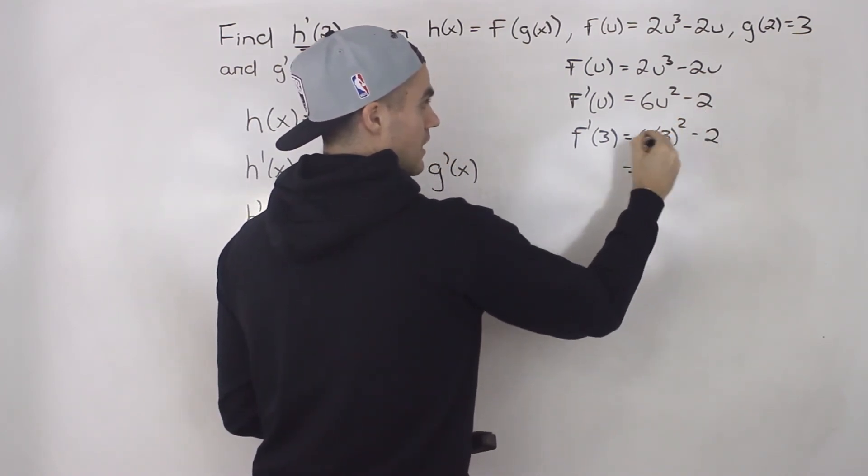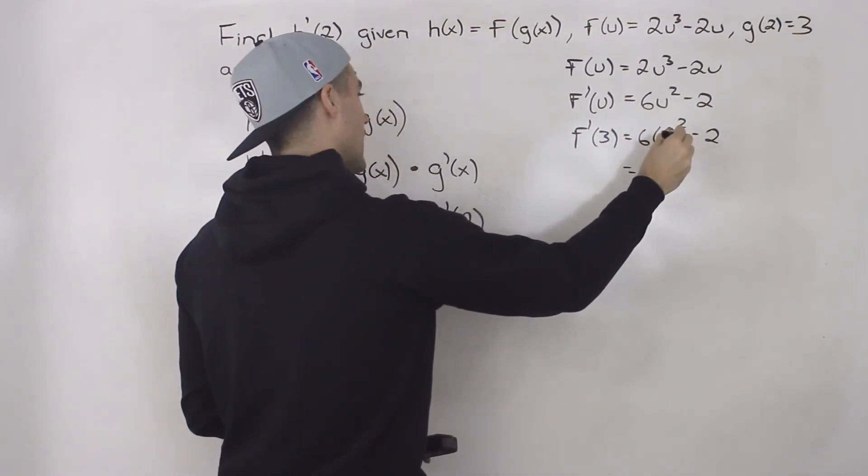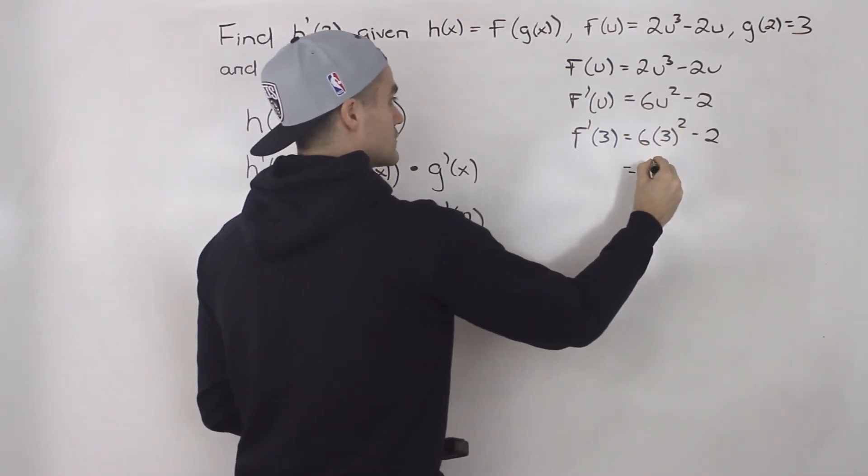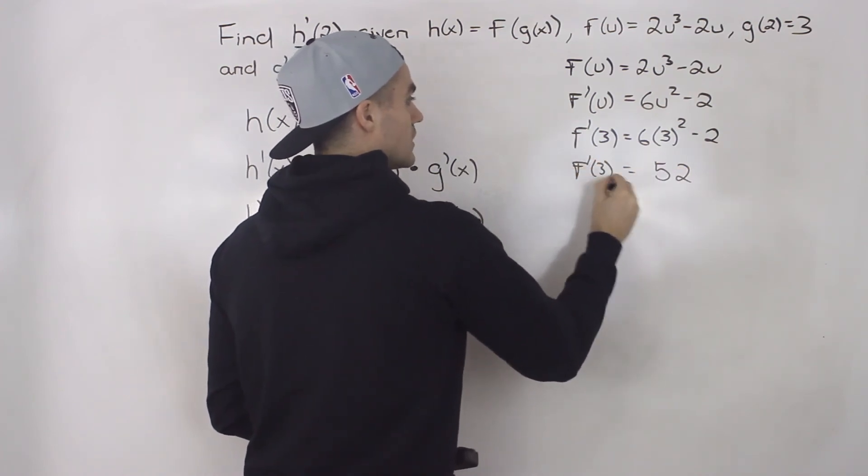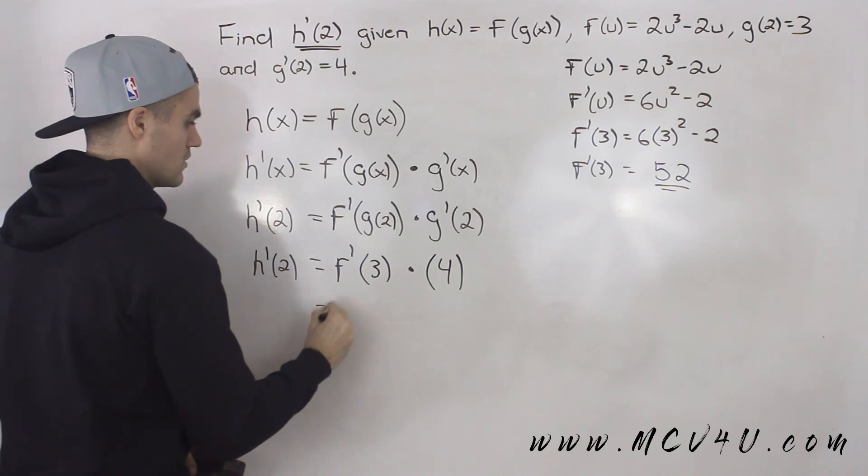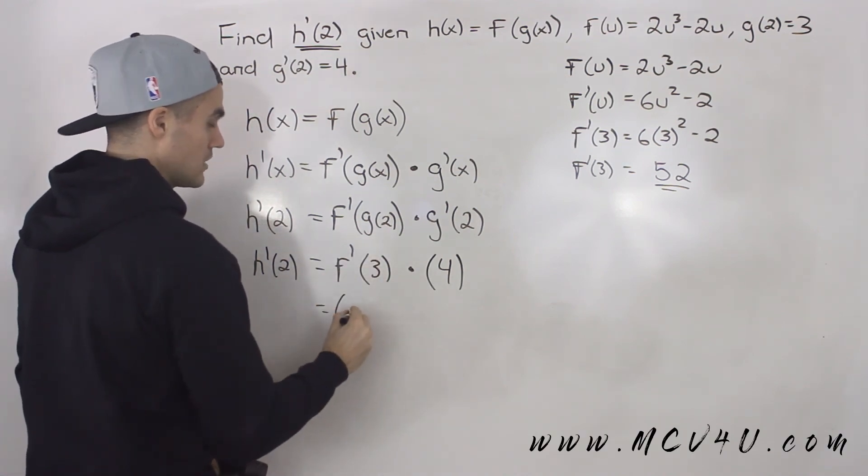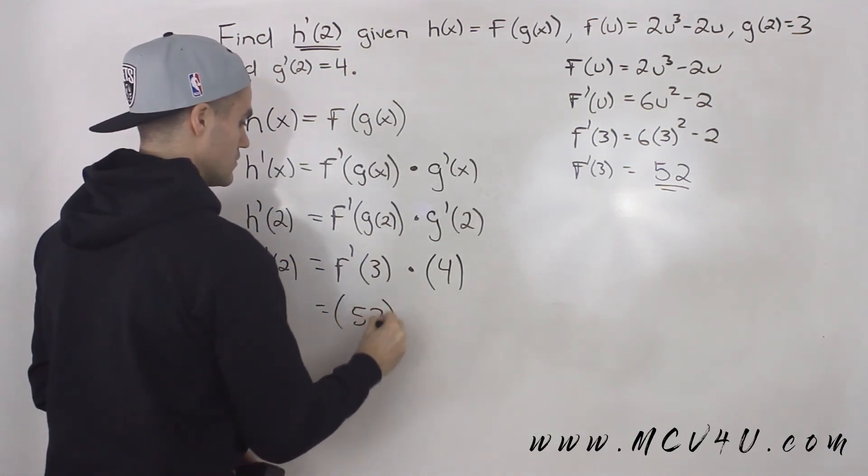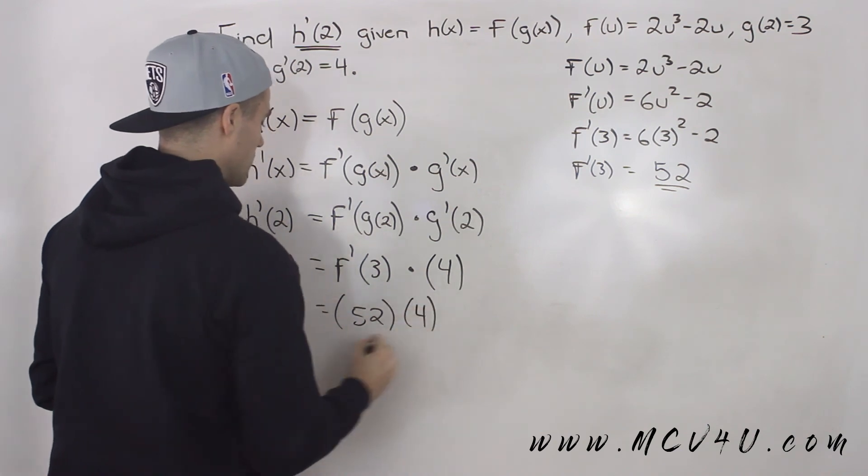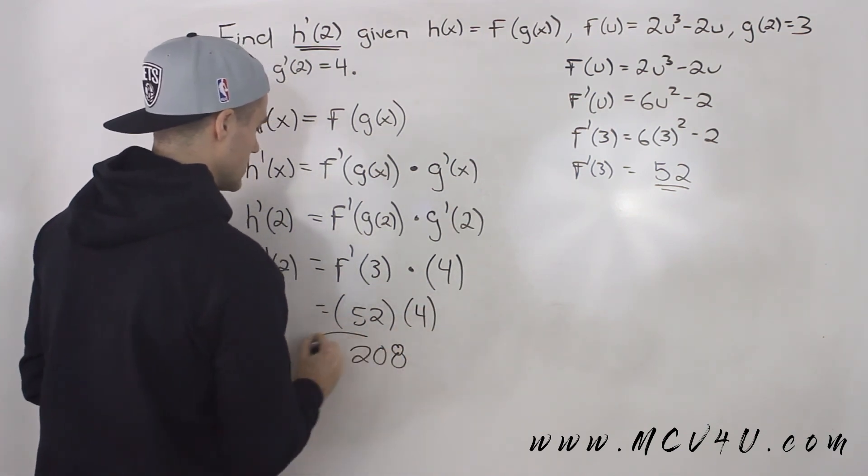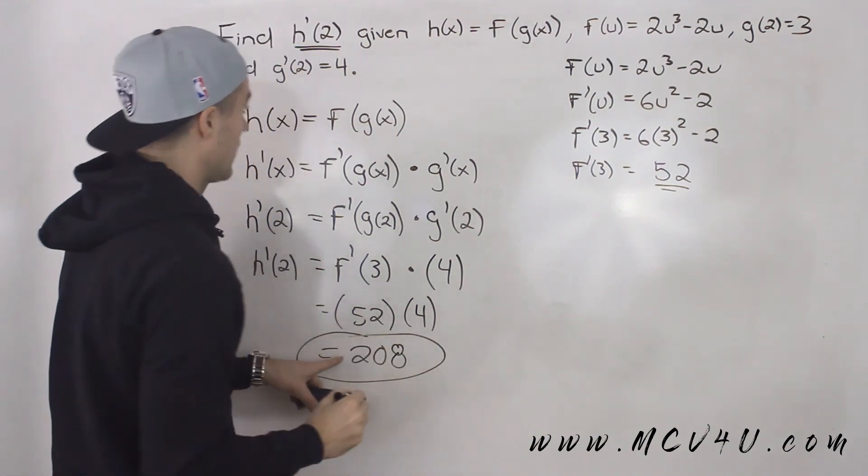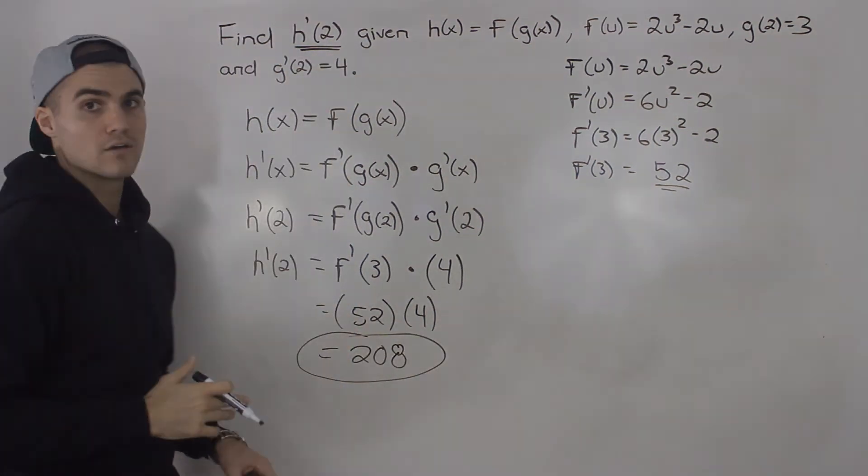So 3² is 9 times 6 is 54 minus 2 gives us 52, so f'(3) equals 52. This expression f'(3) here is 52, and then we just have to multiply it by 4, which gives us 208. That is your final answer for h'(2).